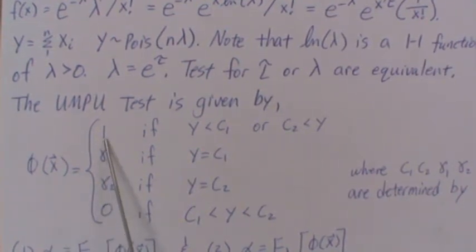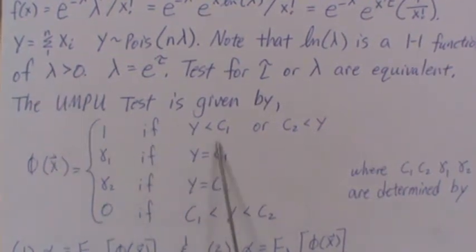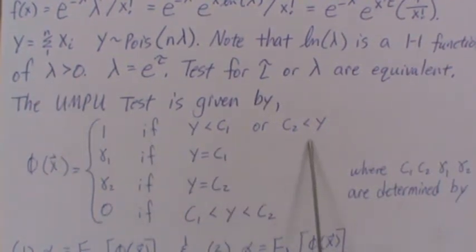The test function is one if Y, our test statistic, is less than C1 or greater than C2. We reject with probability gamma 1 if Y is equal to C1, reject with probability gamma 2 if Y is equal to C2, and we do not reject if Y is between these two cutoff values.